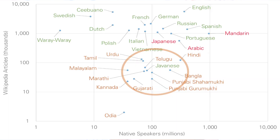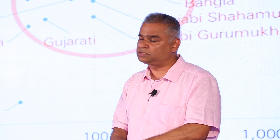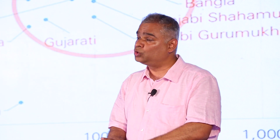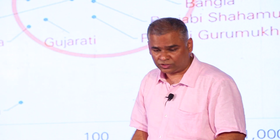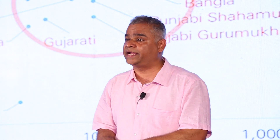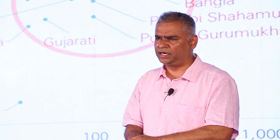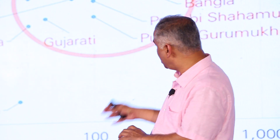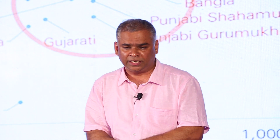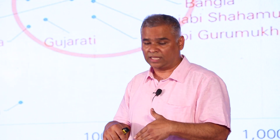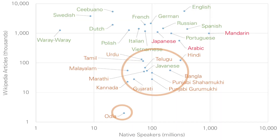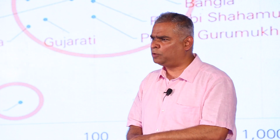There are only three Indian languages with more than one lakh Wikipedia articles. Urdu is the highest with 130,000, Hindi is second with 123,000, and Tamil is third with 115,000. All other languages — Malayalam, Marathi, Kannada, Gujarati, Punjabi, Bangla — are less than 100,000. In fact, Odia is down here with only 2,500 articles in Wikipedia. So that is something that bothers me.